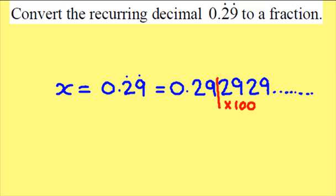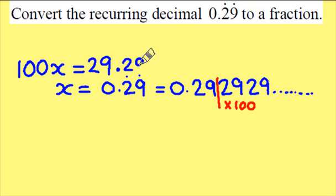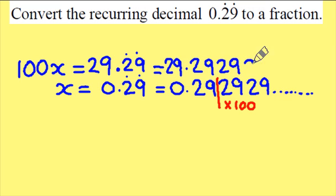Multiplying the line above by 100 will now give me 100x's, because I've multiplied it by 100, is equal to 29.29 recurring which is 29.292929 going on to infinity.